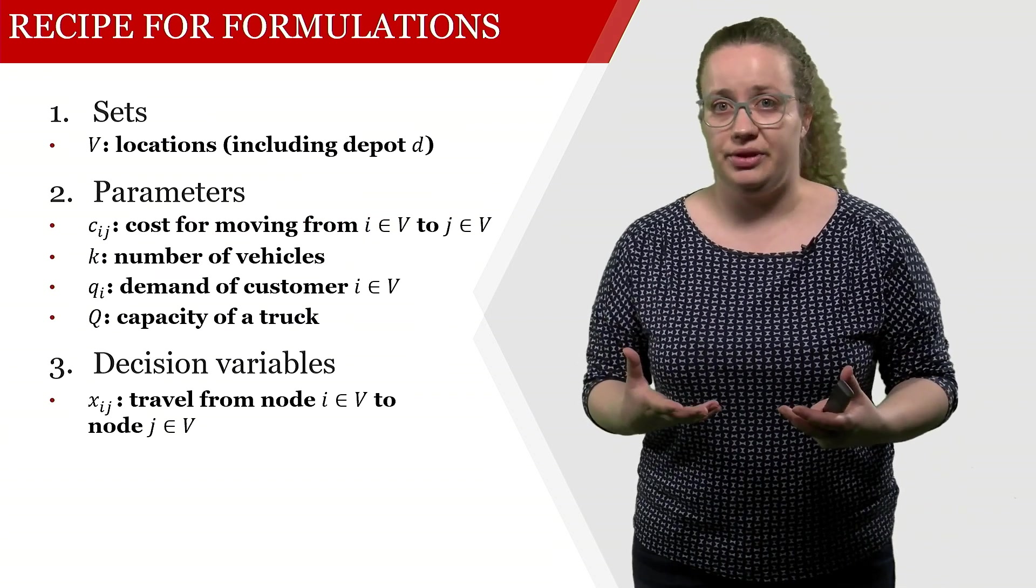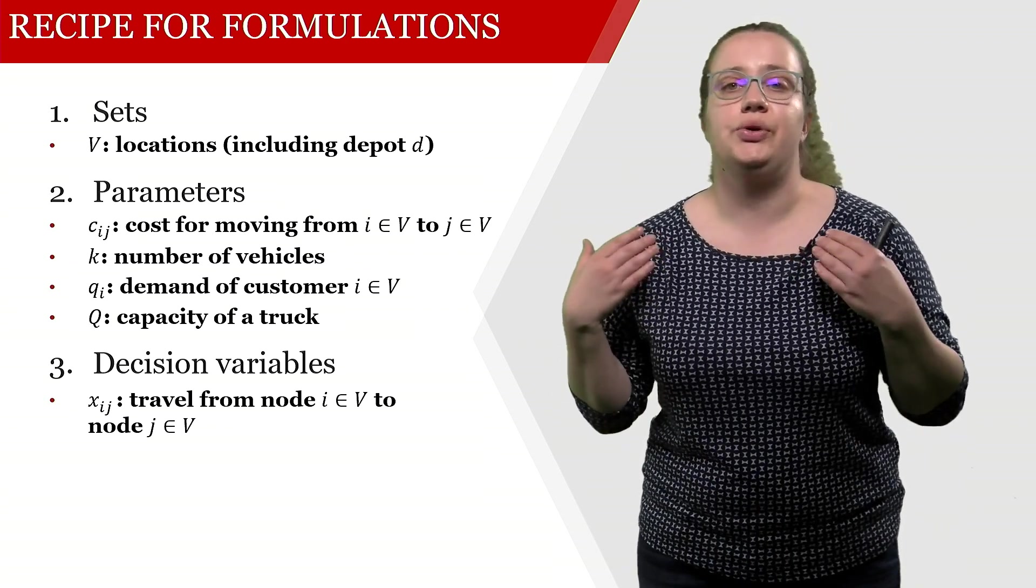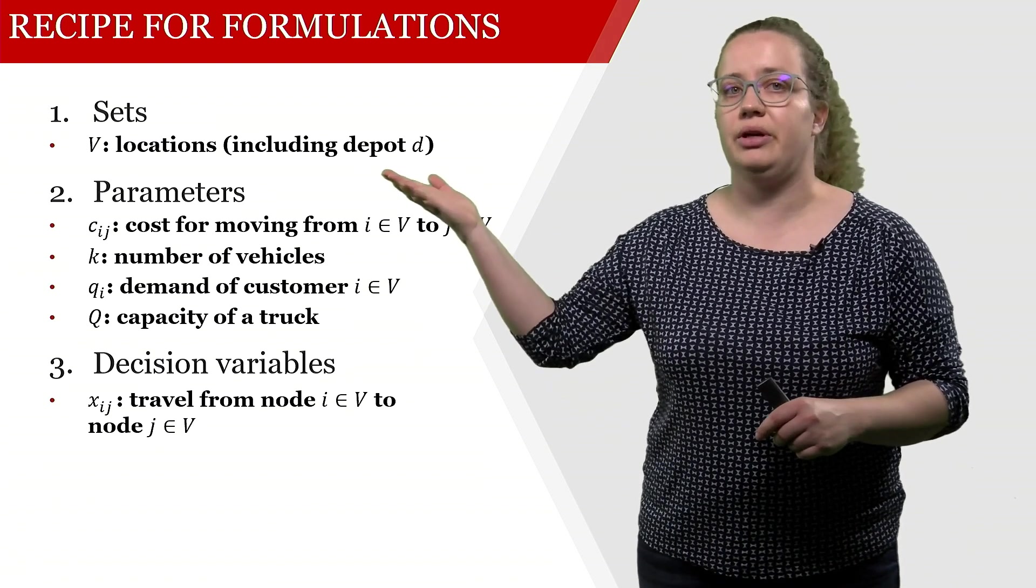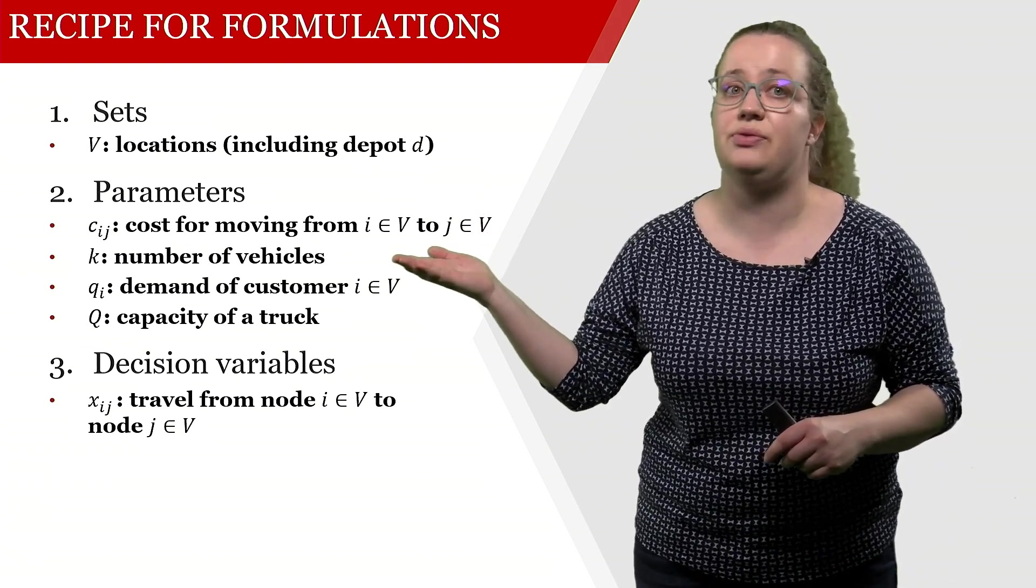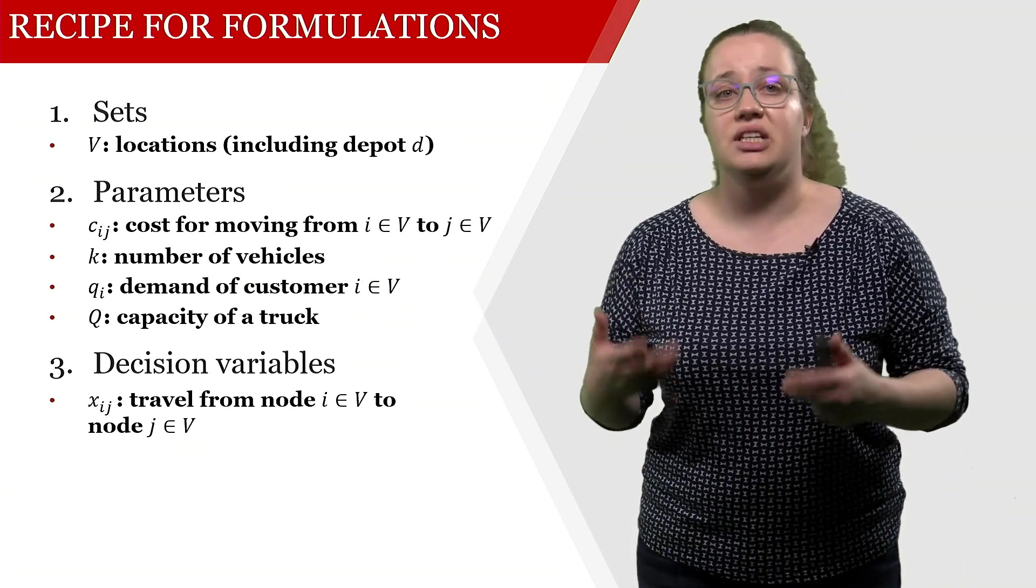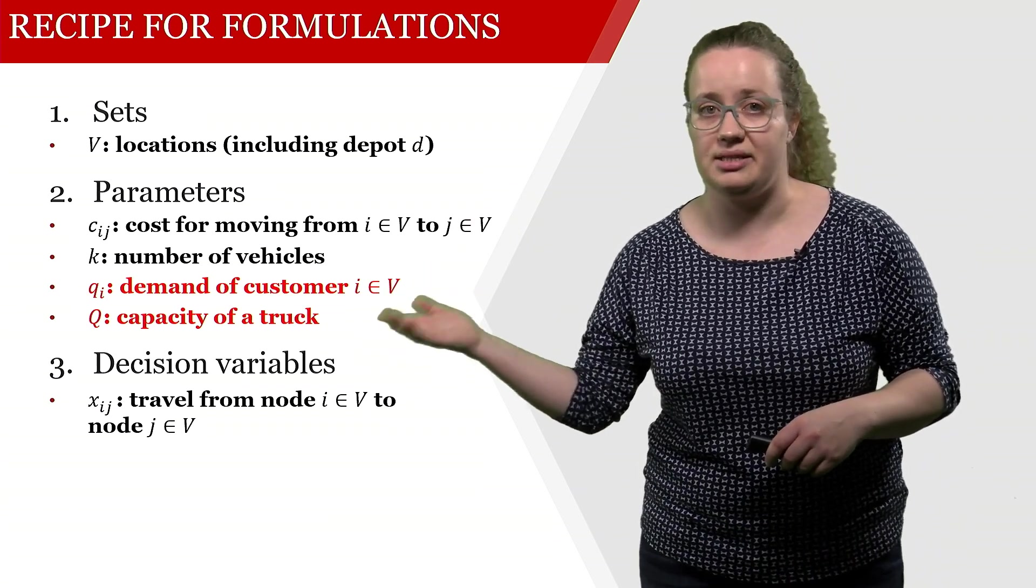What we're doing for that is we're just actually extending this formulation. This is an extension of the vehicle routing formulation with two indices. We're still going to have a set of locations and we're still going to have the parameters for transport cost and for the number of vehicles.